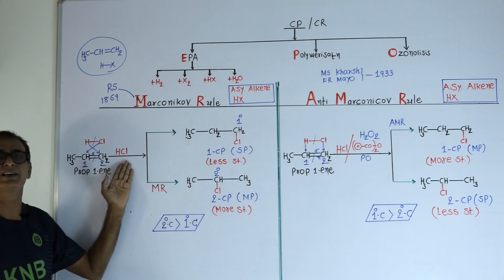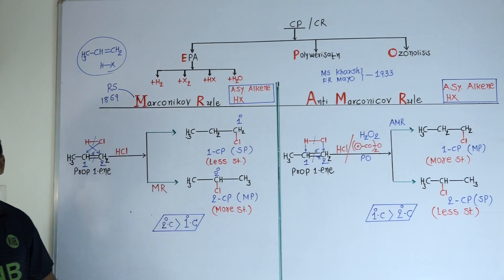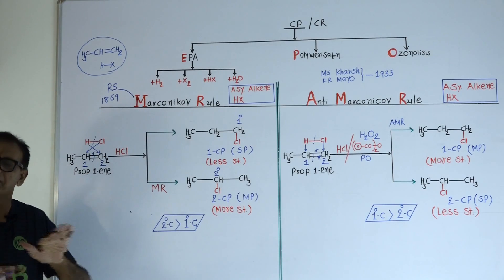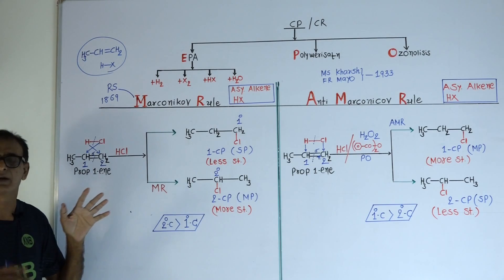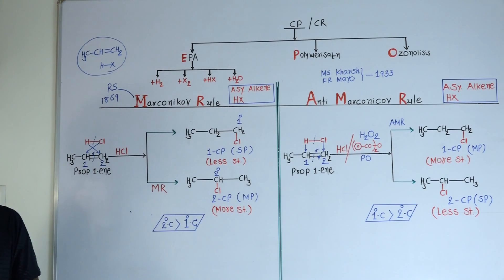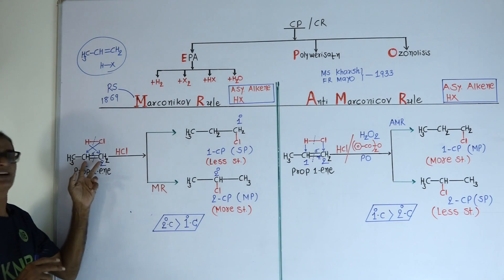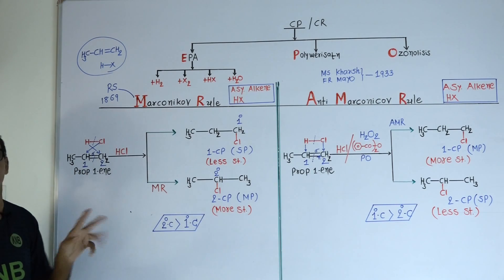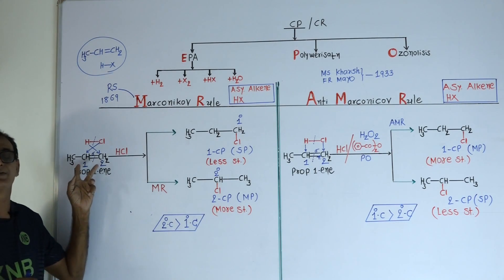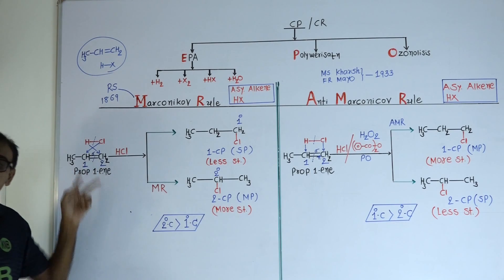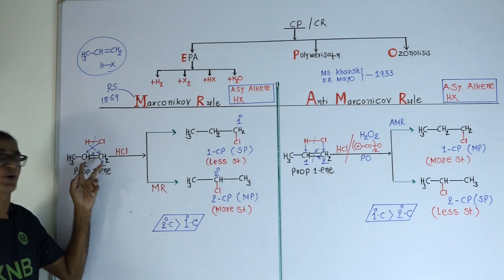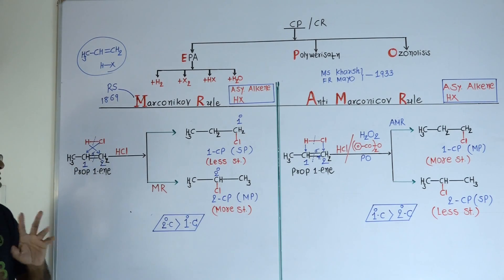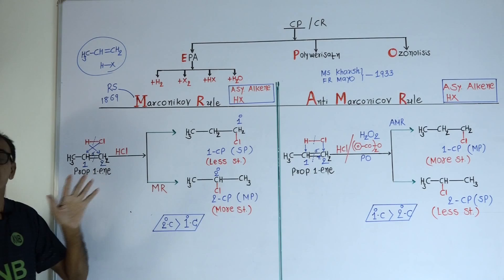This is an addition reaction. The principle is: a reagent has two parts, both parts approach the substrate at the double bond, and the pi bond breaks. As a result, one valency of both carbon atoms decreases, and to satisfy the tetravalency property of both carbon atoms, both parts of the reagent will deal with the carbons.